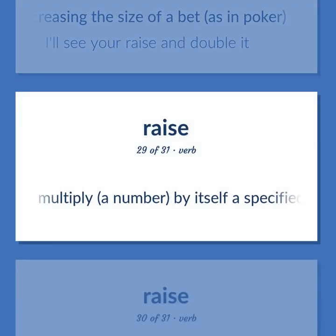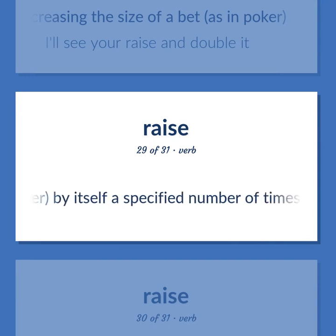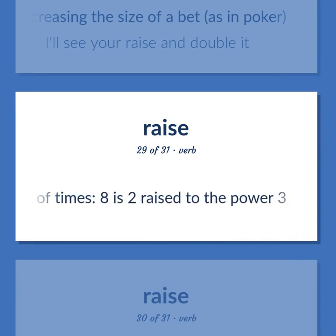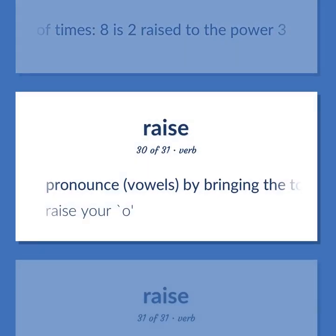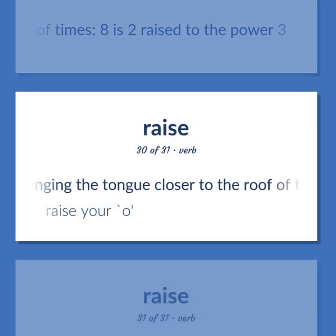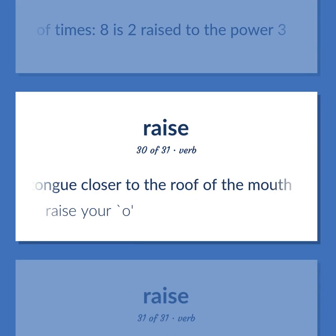Multiply a number by itself a specified number of times: eight is two raised to the power three. Pronounce vowels by bringing the tongue closer to the roof of the mouth. Raise your O.